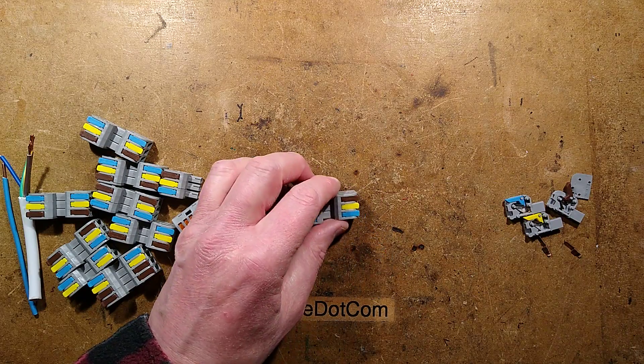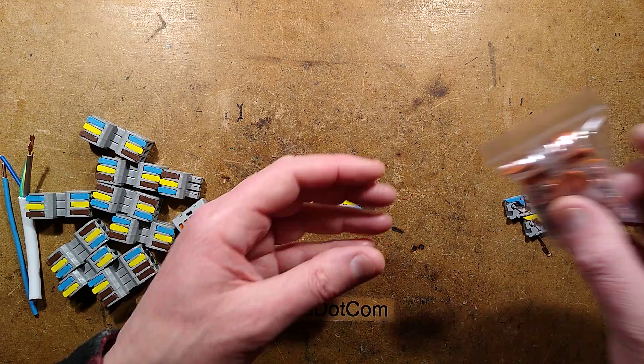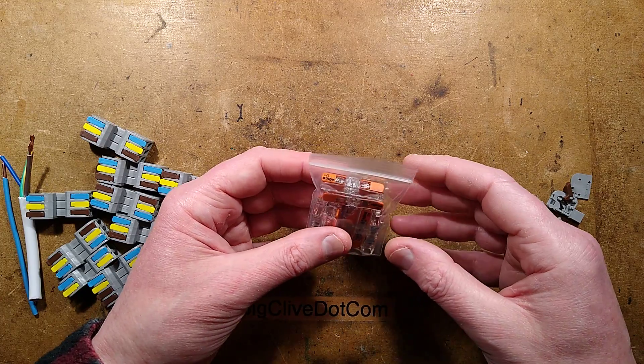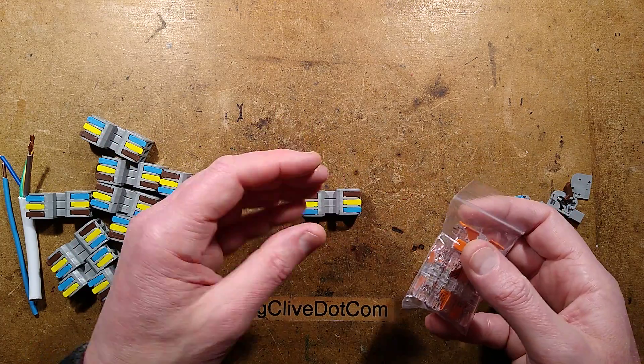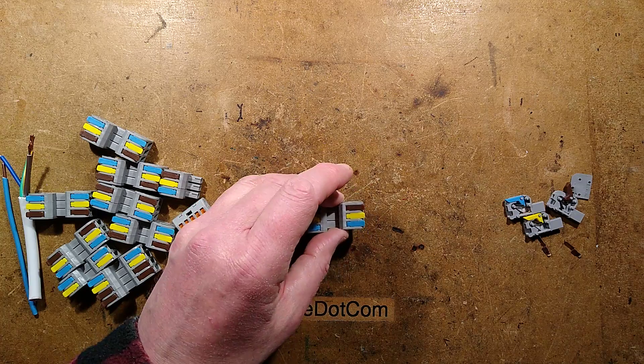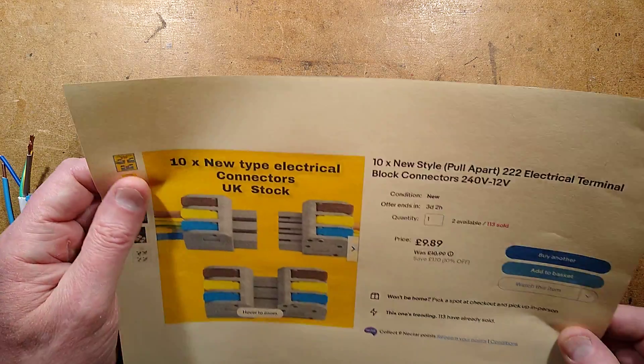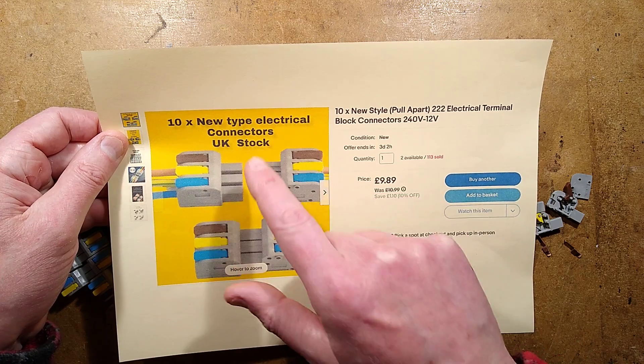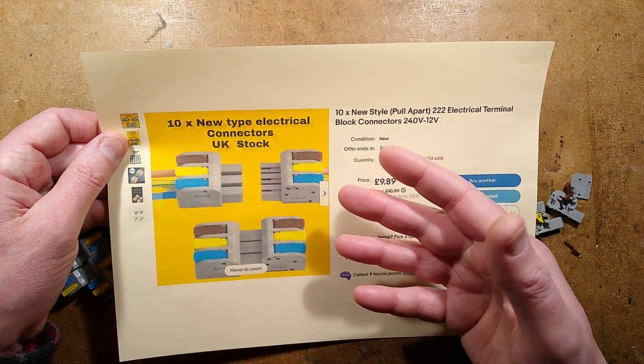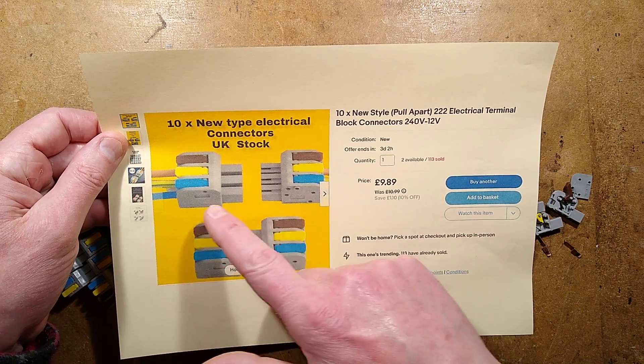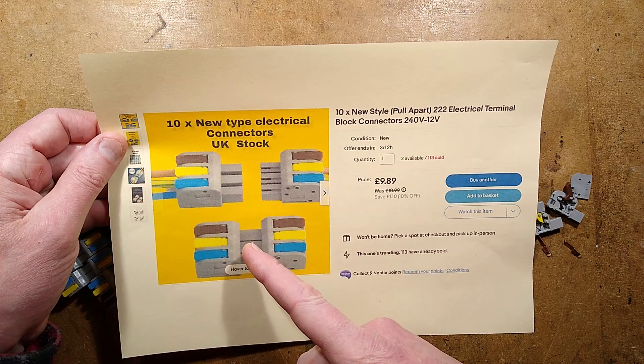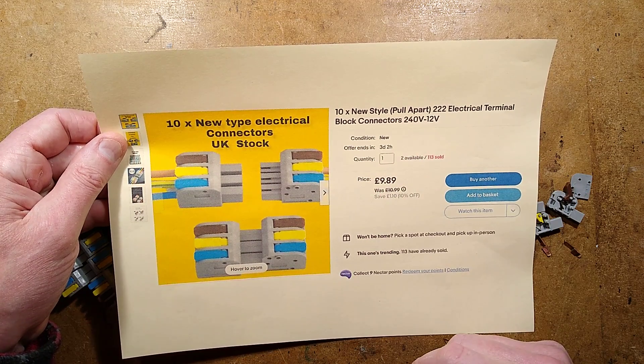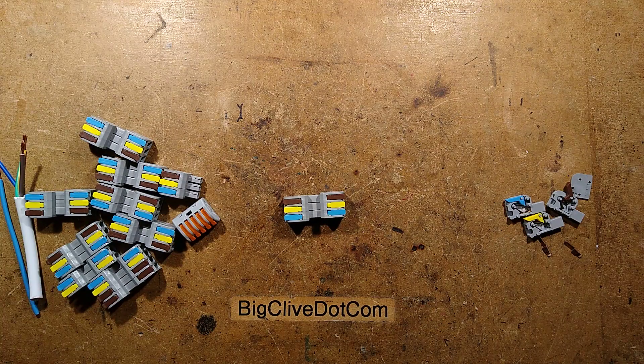This story started with me going on eBay looking for some genuine WAGO or WAGO connectors, Wagner-Albricht. One of the listings was using a WAGO number 222 to promote these connectors - 10 new type electrical connectors, UK stock, delivered fast, pluggable, and it was 10 sets for £10. I thought, let's take a look at these connectors. That's unusually cheap, and it is cheap for a reason.